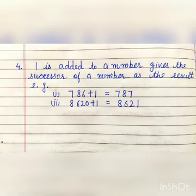Property number 4: If 1 is added to a number, it gives the successor of that number as the result. For example, if we add 1 to 786, the answer will be 787.